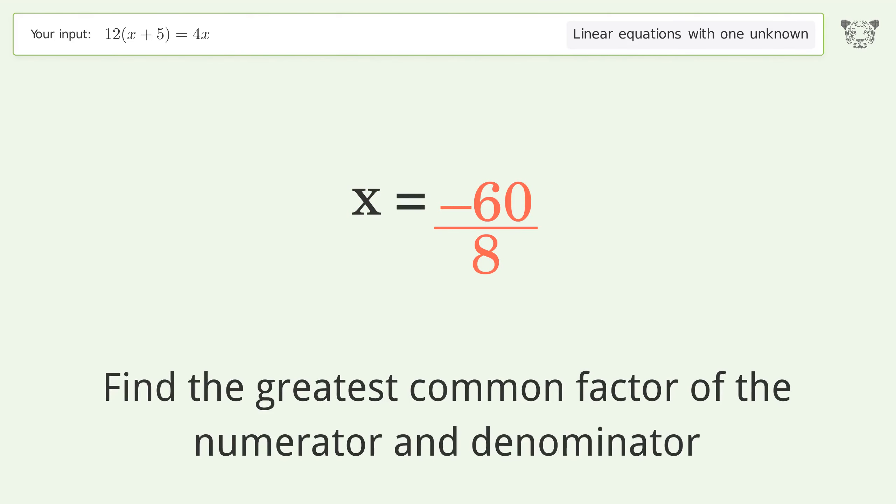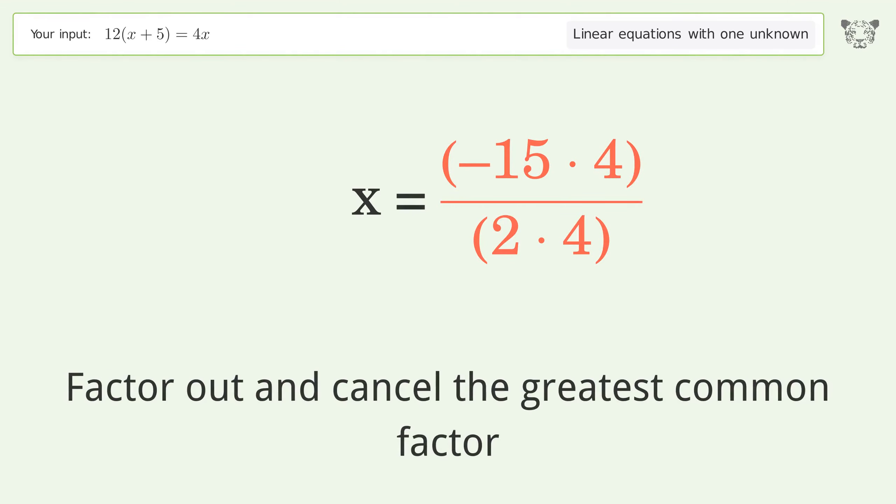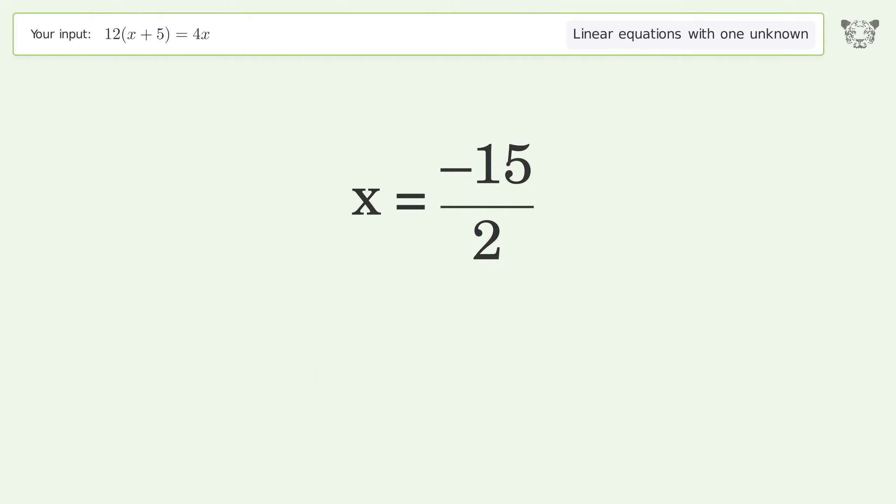Find the greatest common factor of the numerator and denominator. Factor out and cancel the greatest common factor. And so the final result is x equals negative 15 over 2.